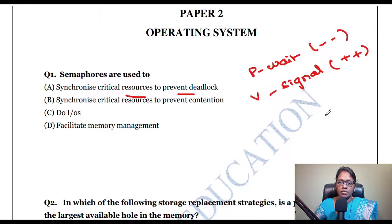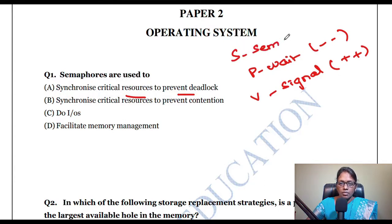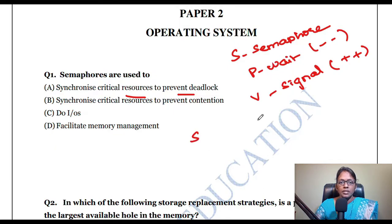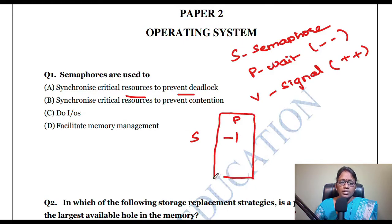The two operations are P and V. P means wait — you have to wait. V means signal — you can enter. S is the semaphore variable. Consider a first person coming and waiting for the CPU, so I use minus one. The P value becomes minus one.